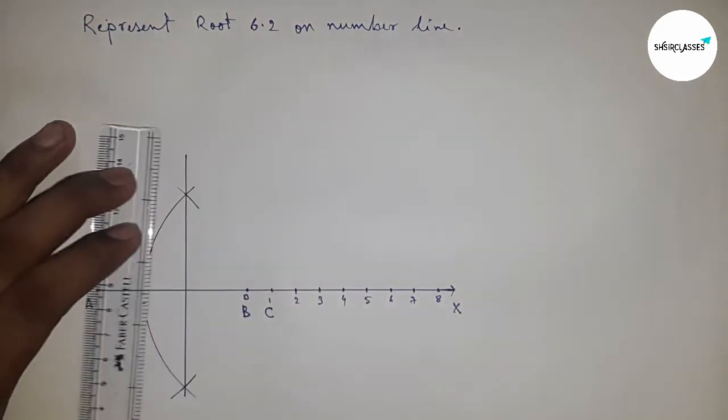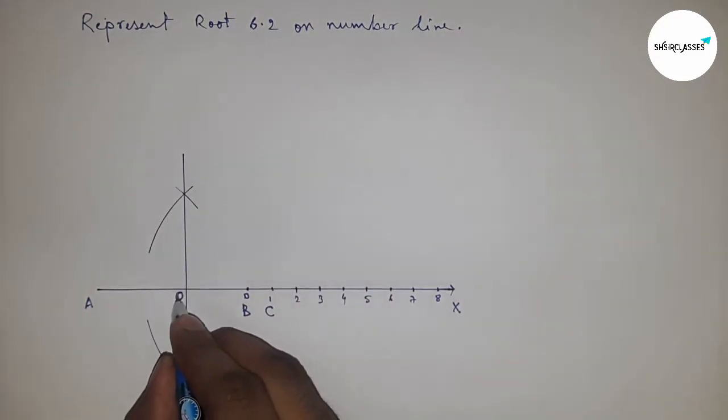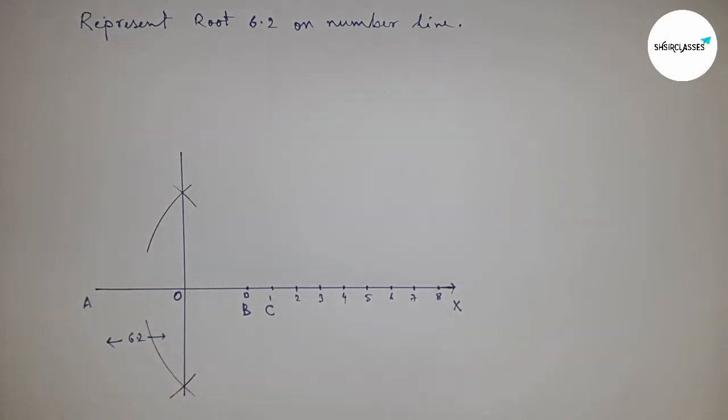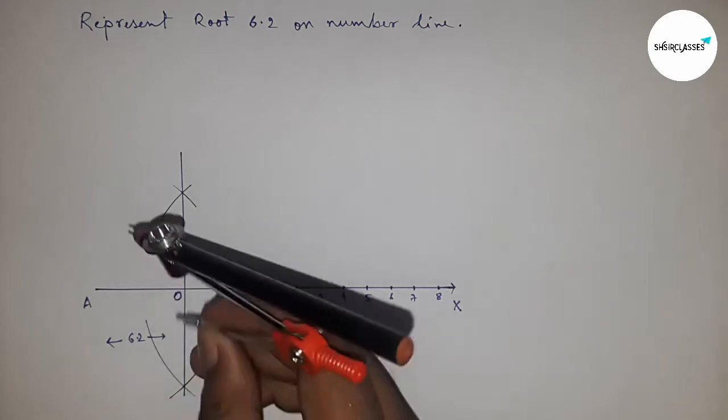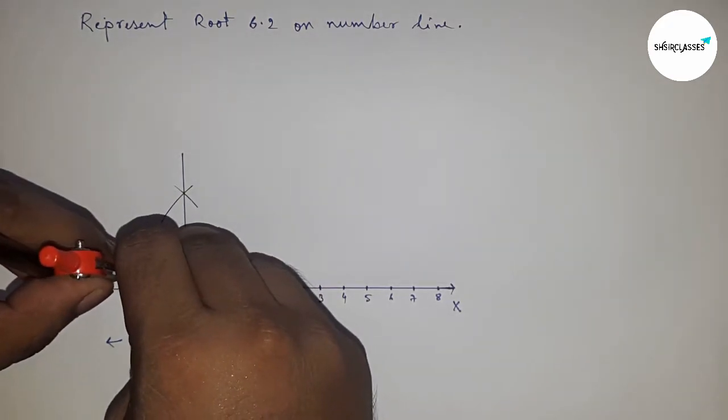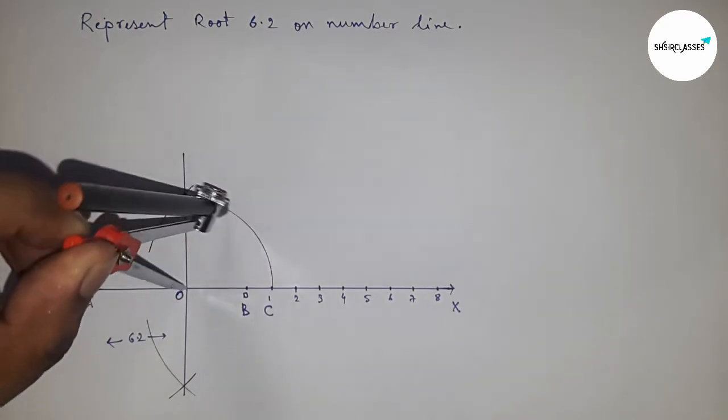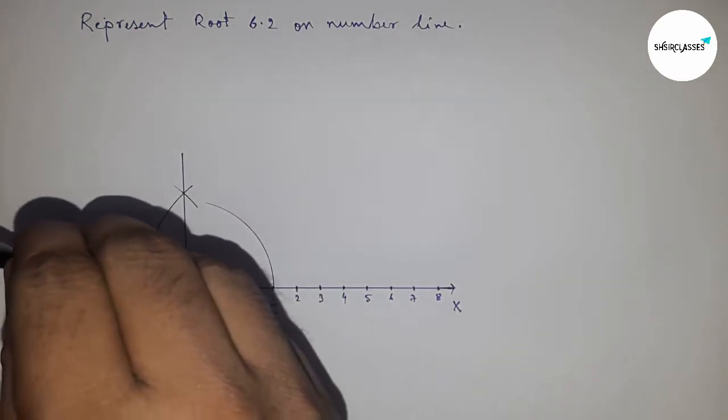This and which bisect at point O. And this is 6.2 centimeter AC line. Next, having to draw a semicircle, so taking the radius OA and OC and drawing a semicircle through the point A and C. This is a semicircle.